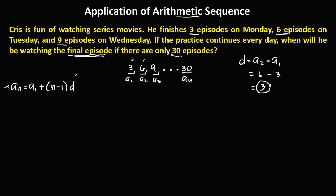Now we can solve at what day he will be watching the final episode. Substituting into the formula: a sub n is 30, equals a sub one which is three, plus (n minus one) times d where d equals three. Then we simplify — transpose the positive three, so 30 minus three, and distribute the three to get three n minus three.